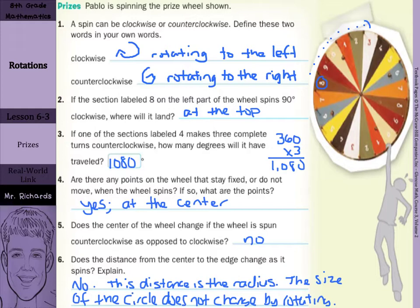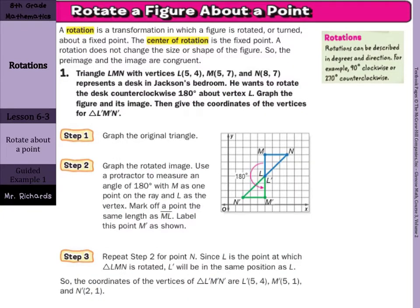And now, let's get on to our lesson. A rotation is a transformation in which a figure is rotated or turned about a fixed point. The center of rotation is the fixed point. Just like the center of our spinner did not move, the center of a rotation doesn't move. A rotation does not change the size or shape of the figure. Rotations can be described in degrees and direction. For example, 90 degrees clockwise or 270 degrees counterclockwise.